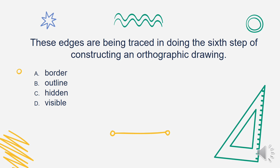Next, these edges are being traced in doing the sixth step of constructing an orthographic drawing. Is it A. Border, B. Outline, C. Hidden, or D. Visible? The answer is Visible — trace the visible edges.